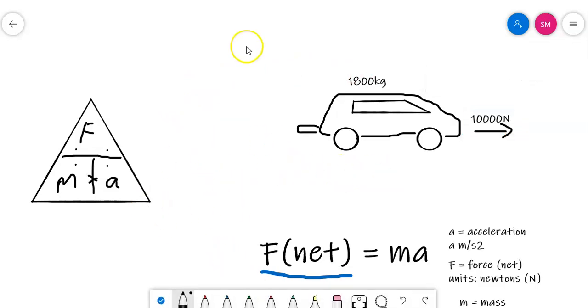So if we're using the formula triangle and we're trying to work out the acceleration, then we put our finger over there and we end up with F divided by M. So A equals F divided by M. So we're going to have 10,000 divided by 1,800.